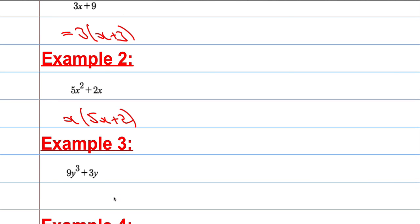Third example, again this should be fairly straightforward. What's common to both terms here? Well I can factor out 3y and that leaves me with 3y squared, because 3y times 3y squared is 9y cubed plus, and 3y times 1 will give me 3y.